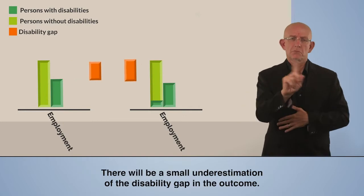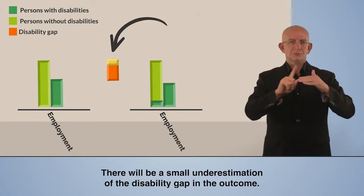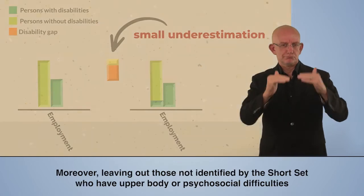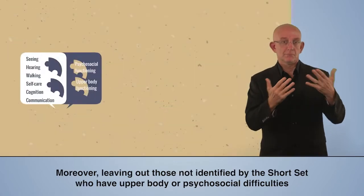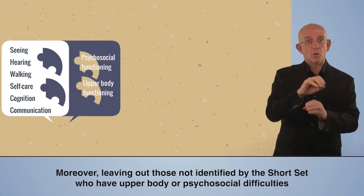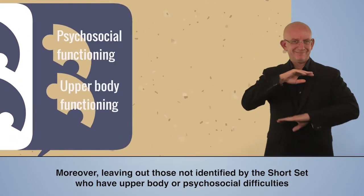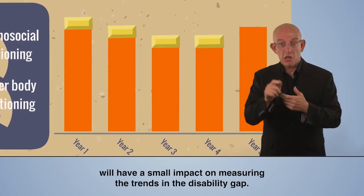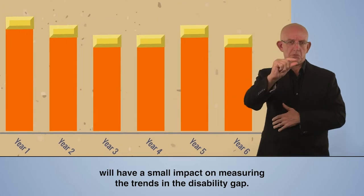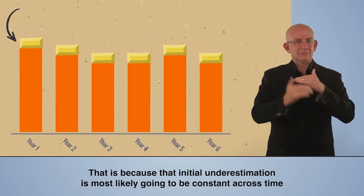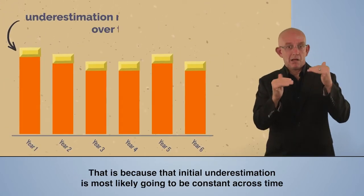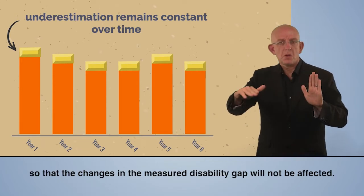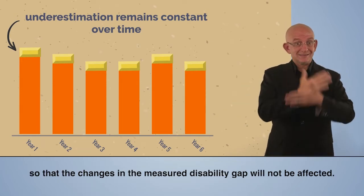There will be a small underestimation of the disability gap in the outcome. Moreover, leaving out those not identified by the short set who have upper body or psychosocial difficulties will have a small impact on measuring the trends in the disability gap. That is because that initial underestimation is most likely going to be constant across time, so that the changes in the measured disability gap will not be affected.